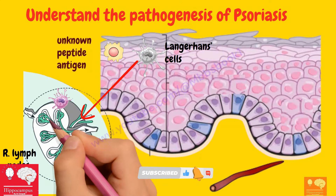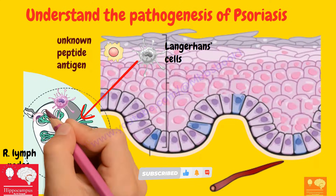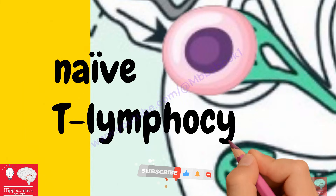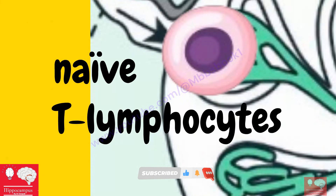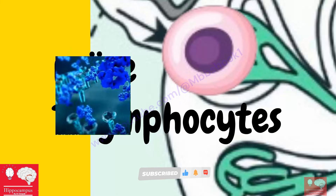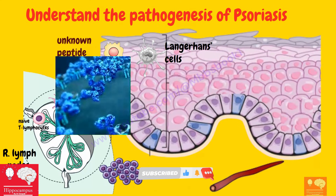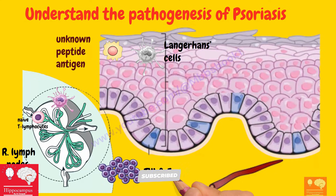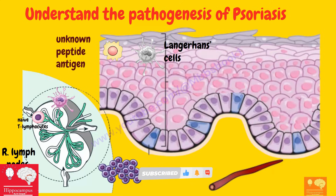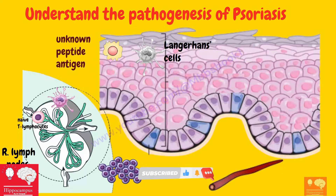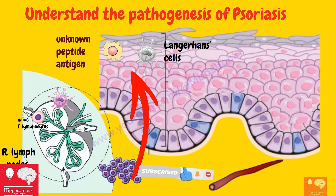In the regional lymph node, the Langerhans cells come in contact with naive T lymphocytes within an immunologic synapse. The molecular interaction results in T-cell production. The lymph node produces Th1 and Th17 cells. A large number of T cells will come out of the lymph nodes.